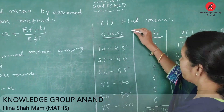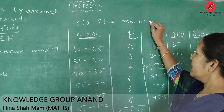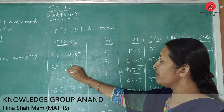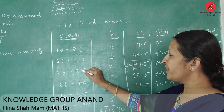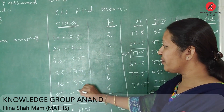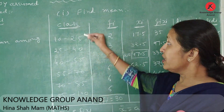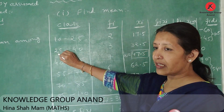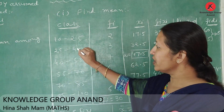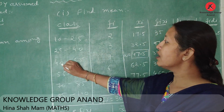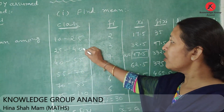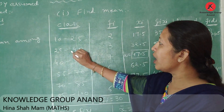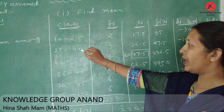Let us take an example. Find the mean, given the classes: 10 to 25, 25 to 40, 40 to 55, 55 to 70, 70 to 85, and 85 to 100. In this class system, 25 is included in the second class 25 to 40. The observation is included up to 39.5 in that class.